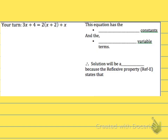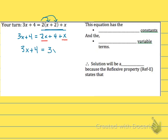In the next equation, we have an expression that requires the distributive property on the right-hand side. We get 3x plus 4 on the left, and I distribute the 2, giving me 2x plus 4 plus x. Then I combine like terms on the right-hand side, which gives me 3x plus 4 is equal to 3x plus 4. If I continue to solve, I subtract 3x from both sides and end up with 4 is equal to 4. This is a demonstration of the reflexive property — it is true — and that means my solution can be any value.